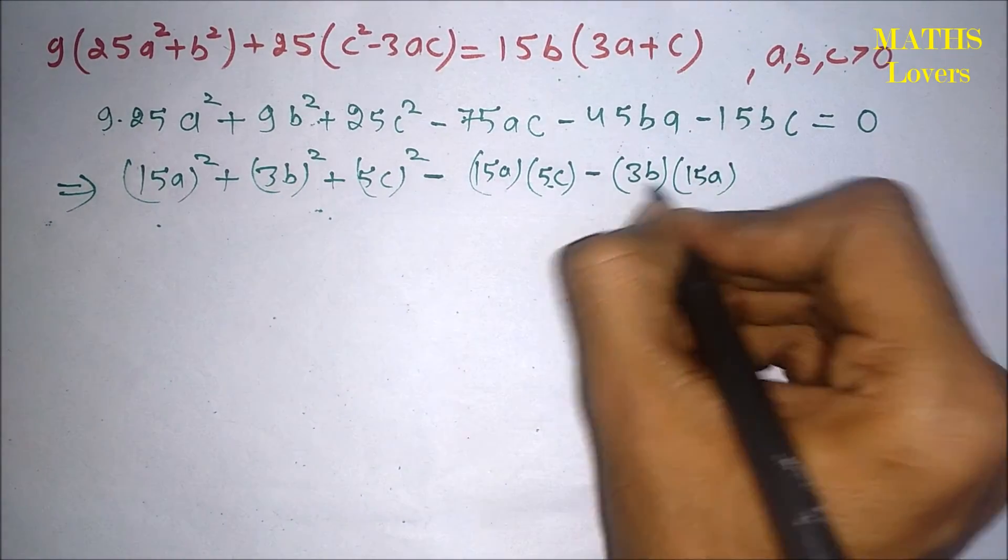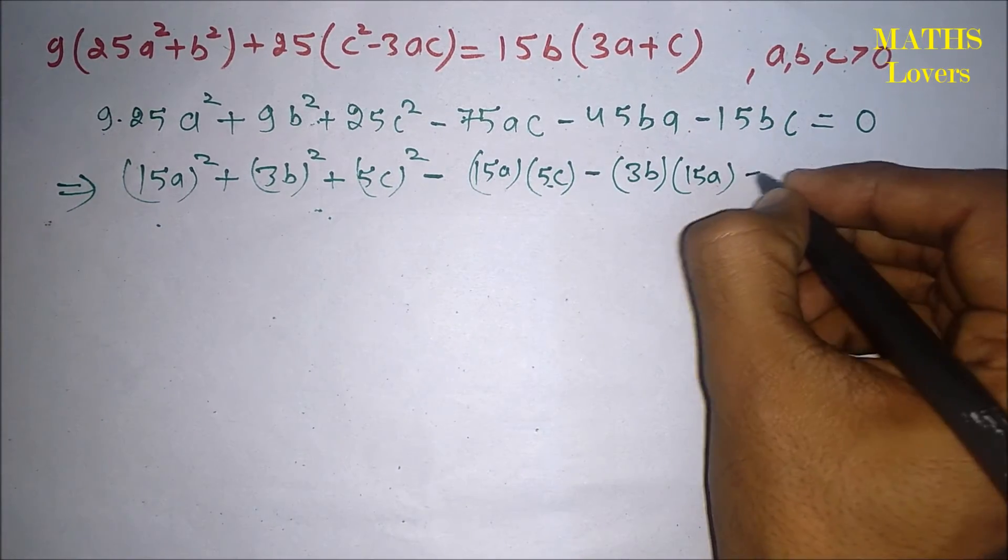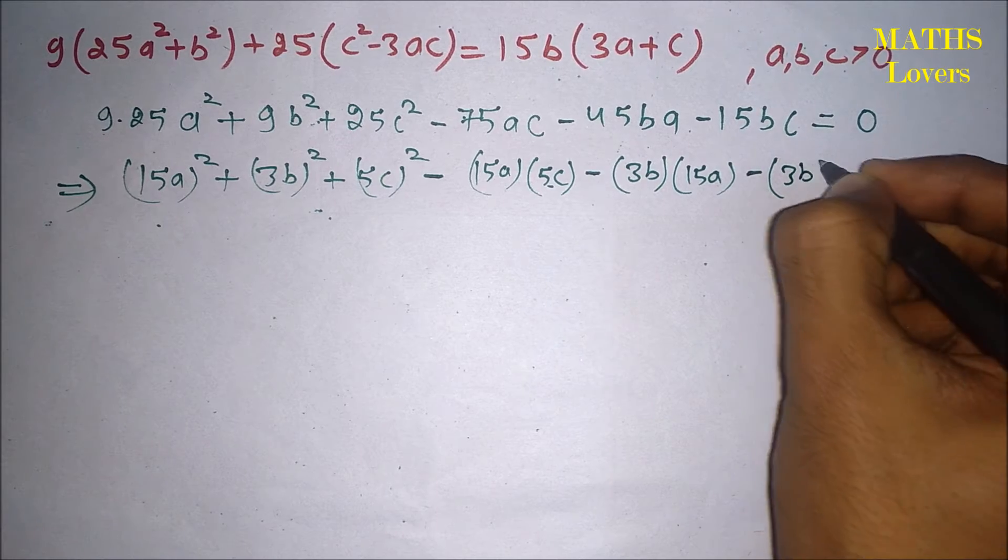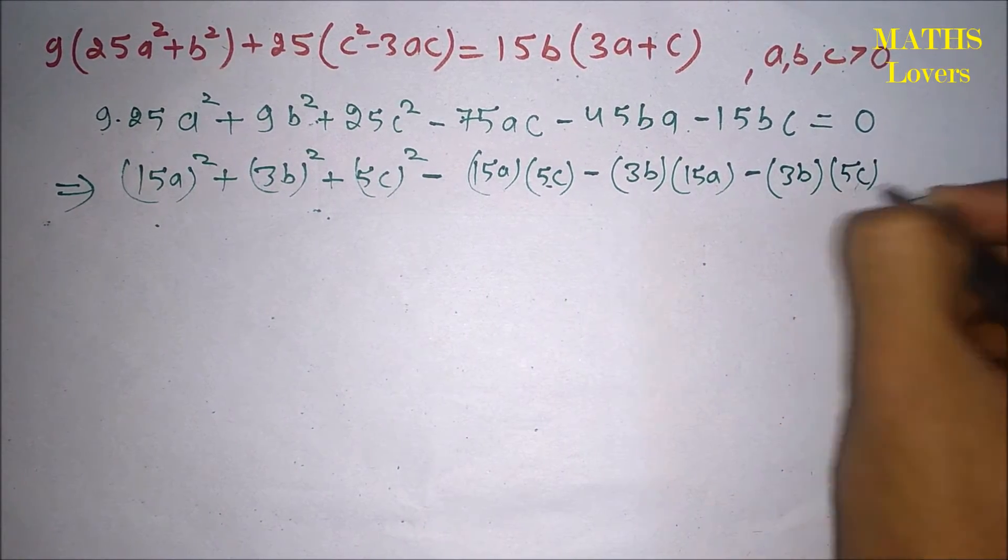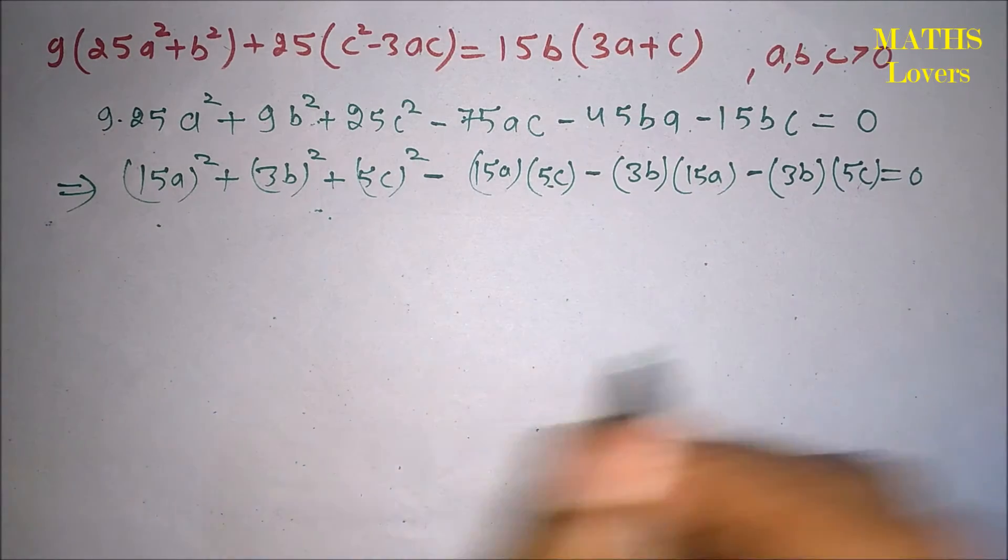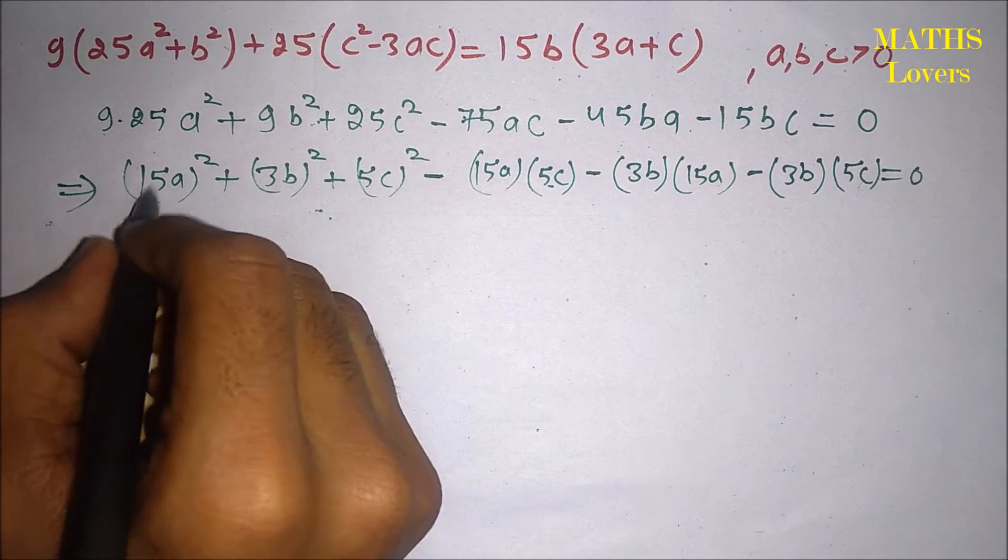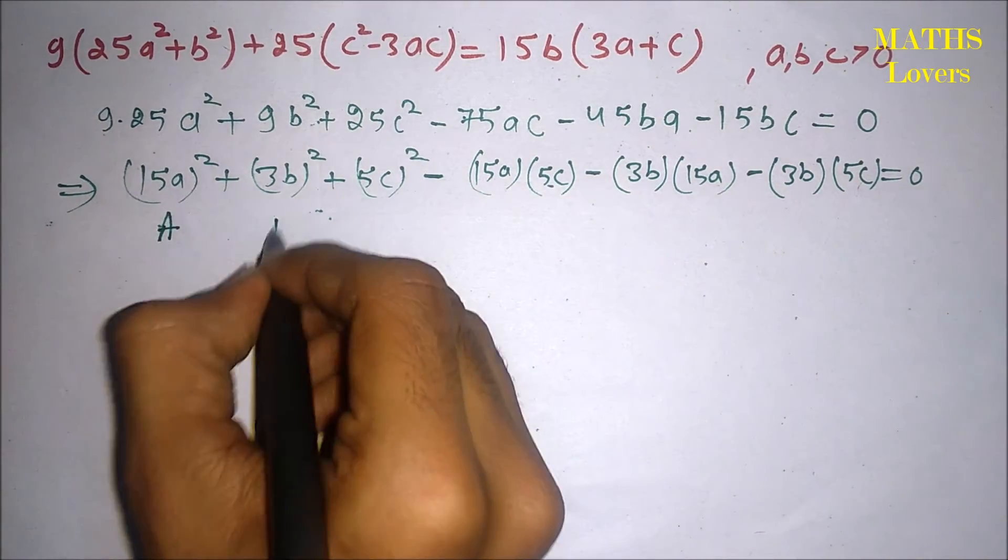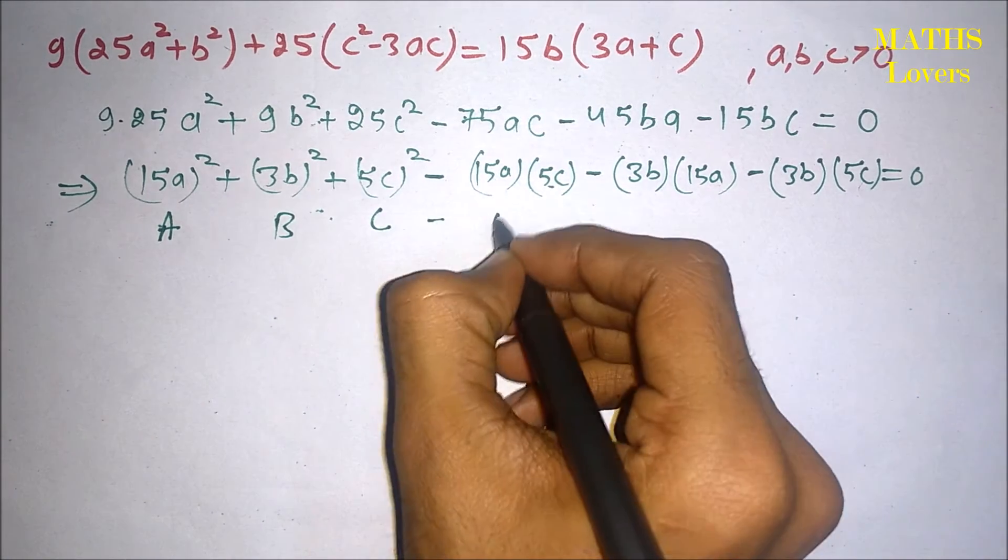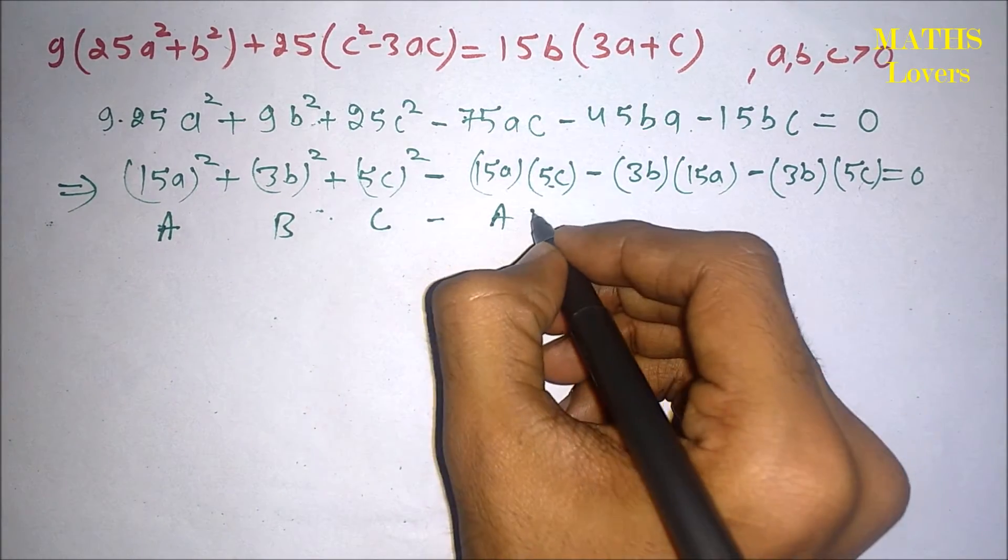minus 3b and 5c, 5 to 3, 15. It can be written this. So if I assume it as capital A, B, C, so it will be like this: A²